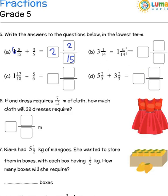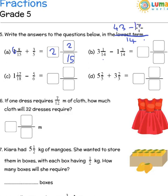3 and 1 by 14 minus 1 and 3 by 14. You can convert this into an improper fraction: 14 multiplied by 3 is 42 plus 1 is 43 by 14. Since the denominators are the same, I have a common denominator with a subtraction sign. 14 multiplied by 1 is 14 plus 3 is 17. So 43 minus 17 gives you 26 by 14. When you divide it you get 1 and 12 by 14. But we have to bring it to the lowest terms, so 12 and 14 have 2 as a common factor — it becomes 1 and 6 by 7.